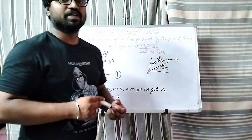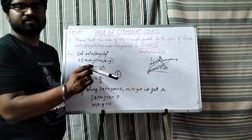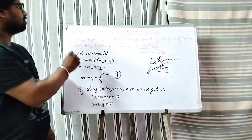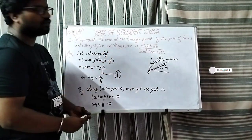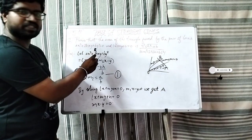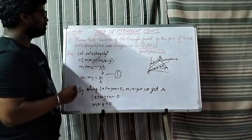Hi friends, we continue with part B. We have to do pair of straight lines, this is 7 marks. The area of triangle formed by the pair of lines ax square plus 2hxy plus by square equal to 0,